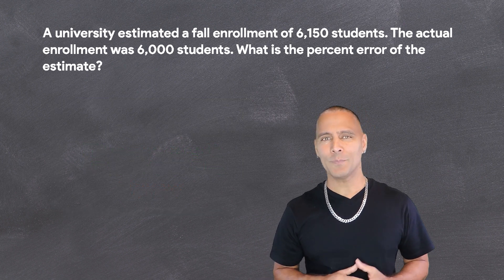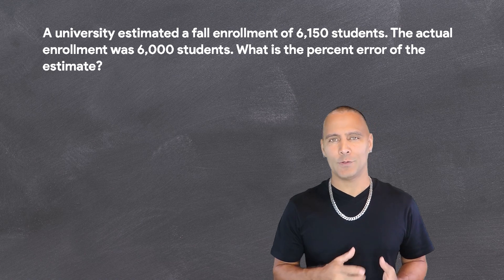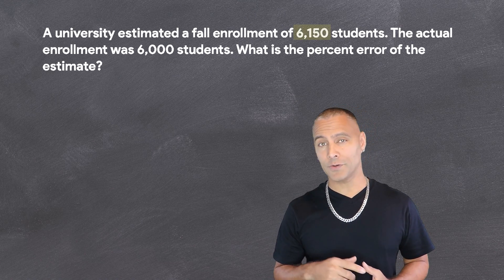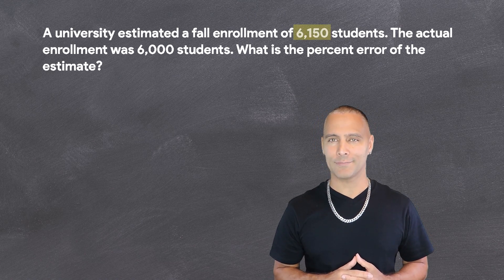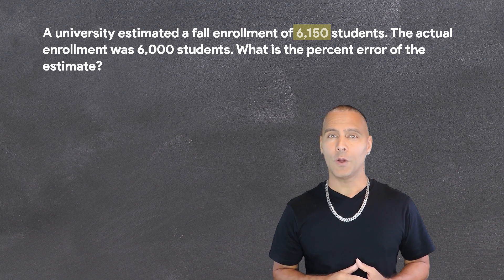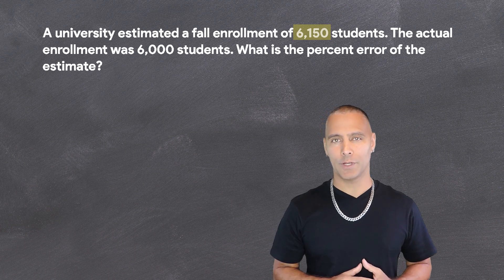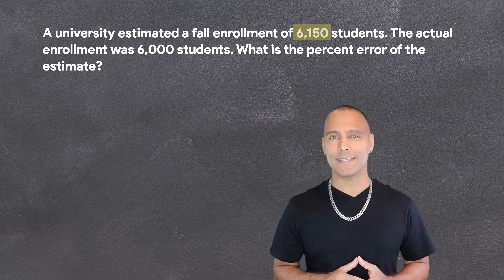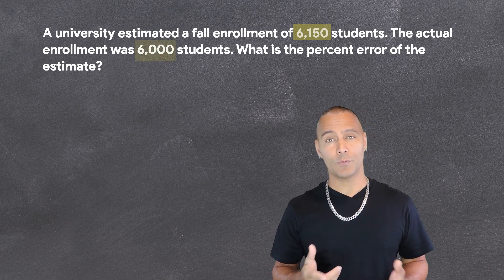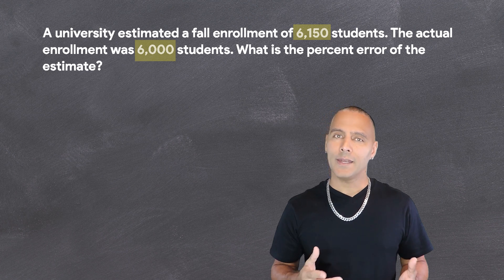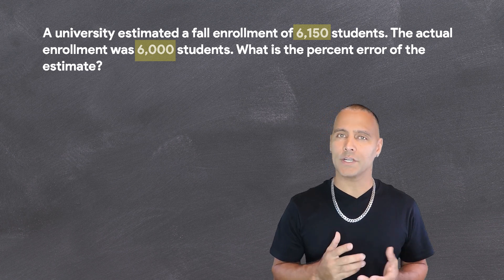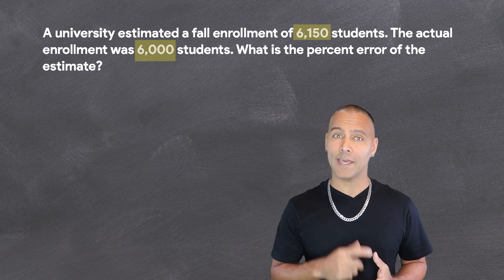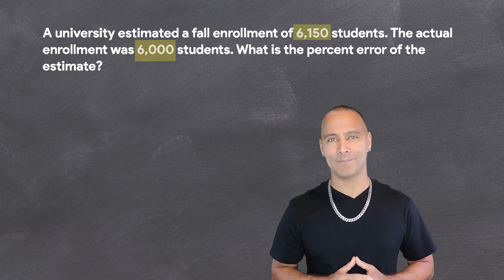So, imagine a university projected a fall enrollment of 6,150 students. However, when the actual numbers rolled in, they found that only 6,000 students enrolled. Now, the question is, how far off was that initial estimate?